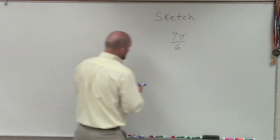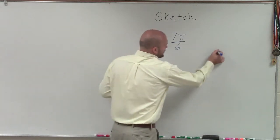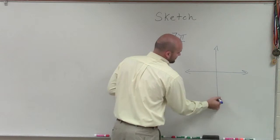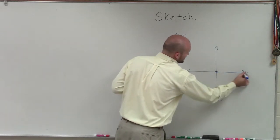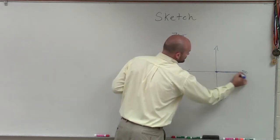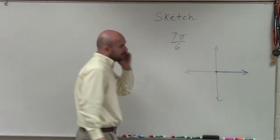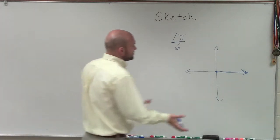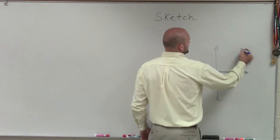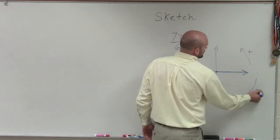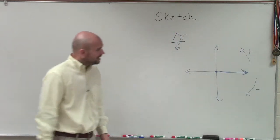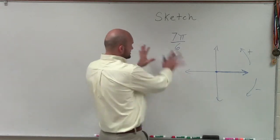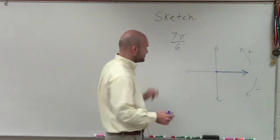So 7 pi over 6 — when I'm looking into graphing this, so far we've talked about sketching angles. It's been very important that we understand that our initial ray is going to be at that point, which we call the standard position. Then we're going to rotate our ray, and remember if we rotate counterclockwise, that's the positive direction. Since this is positive, we're going to go in the counterclockwise direction.